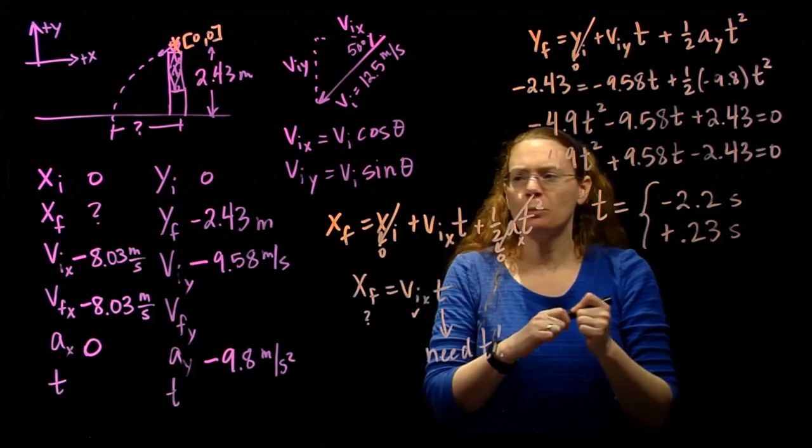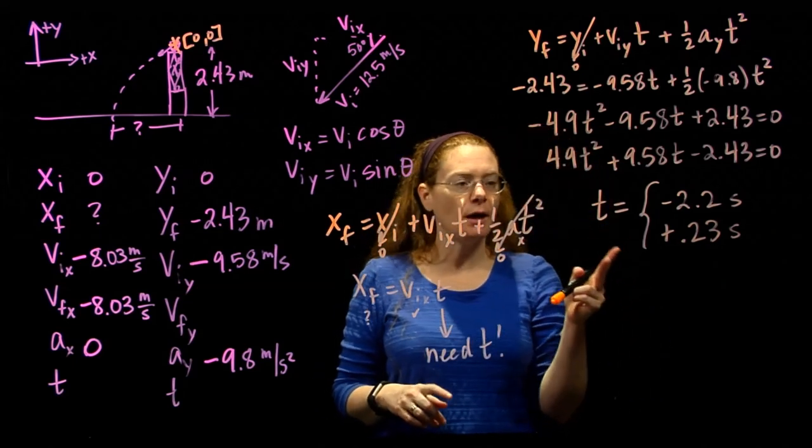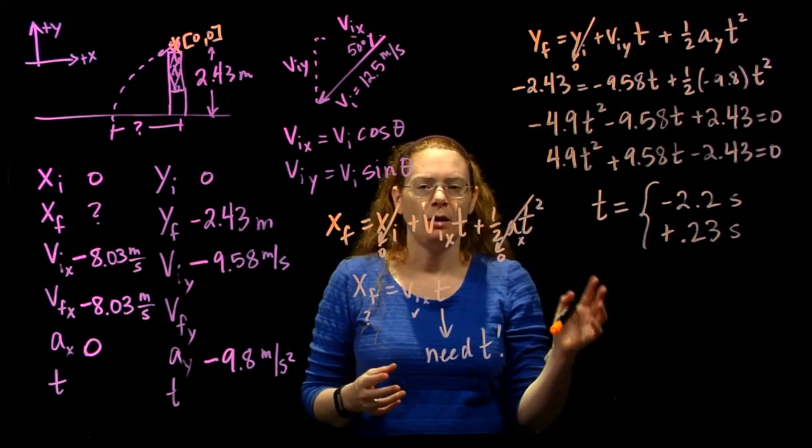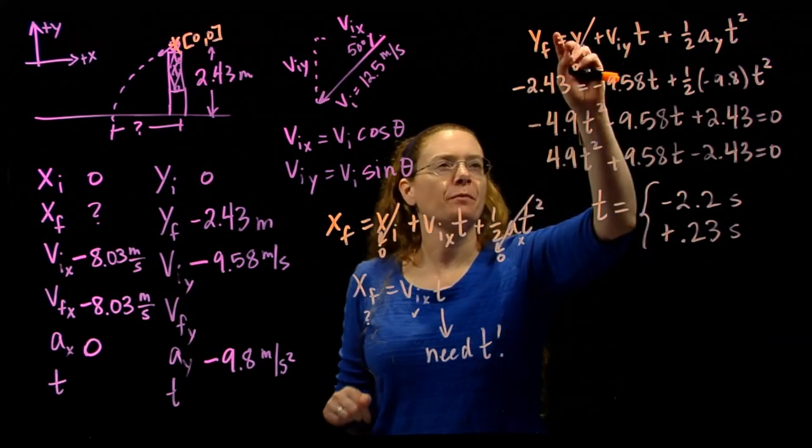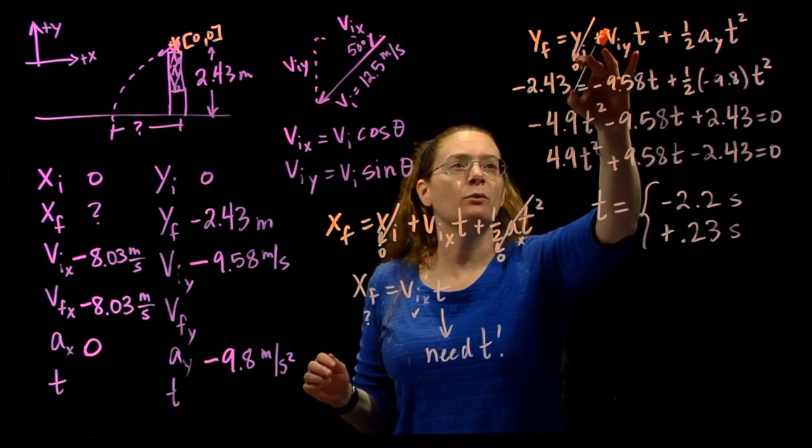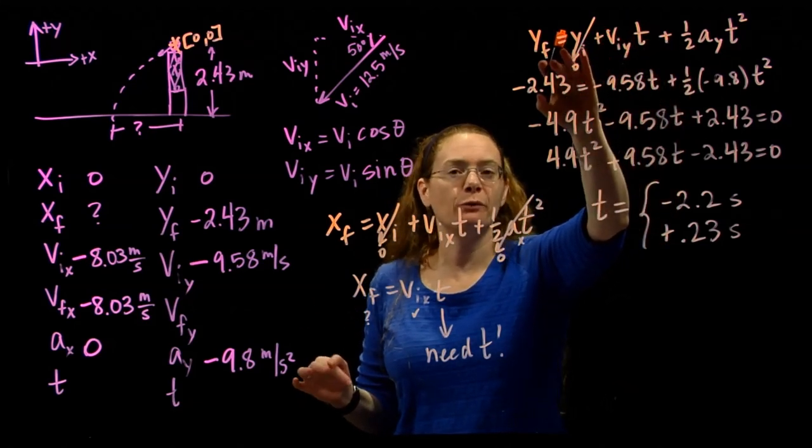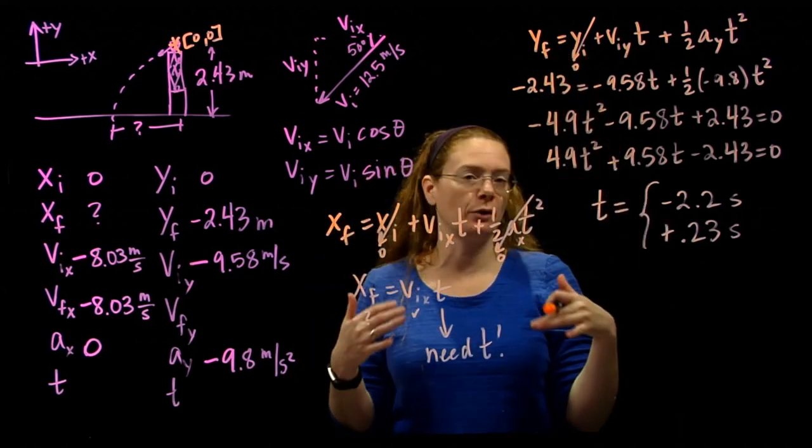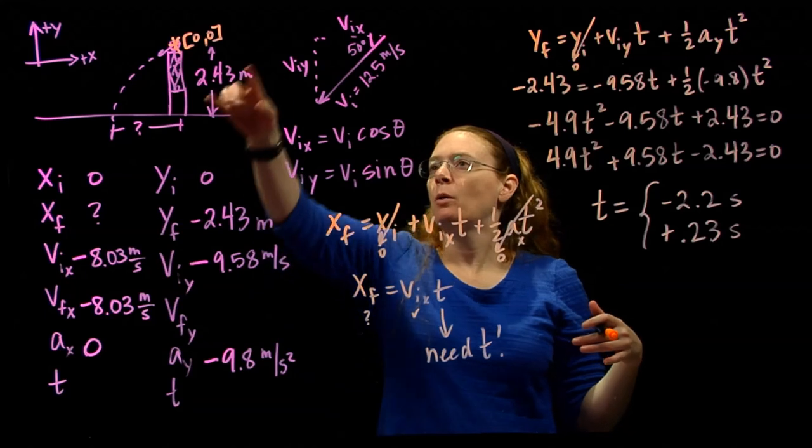So in the previous problem, we had 2 possible correct times. Why do we not have 2 possible correct times this time? So let's go back. This equation, what this equation is doing for me, it's telling me the time at which I go from 0 to negative 2.43 in height. So it's how much time it takes me to drop 2.43 meters.